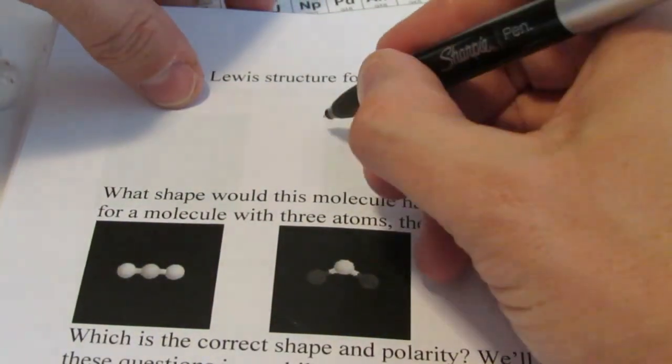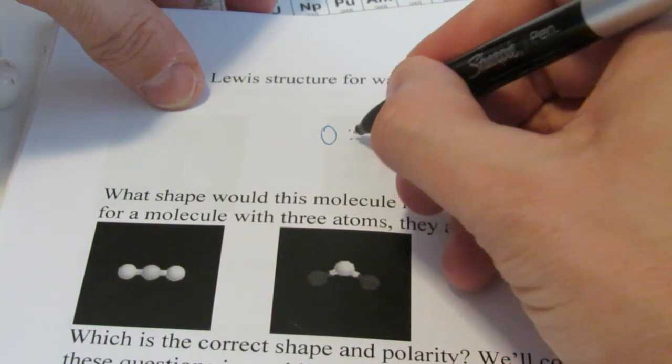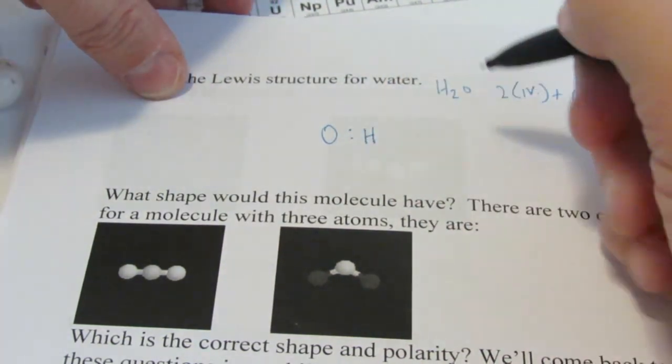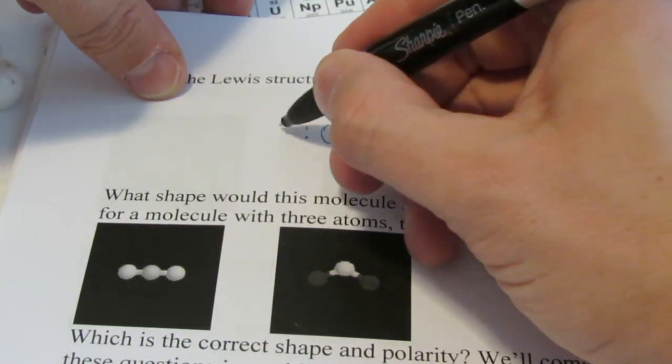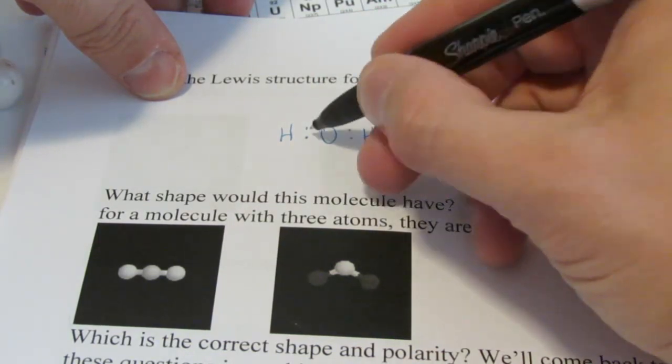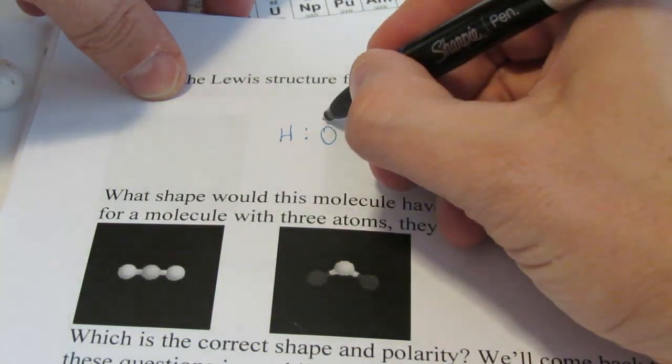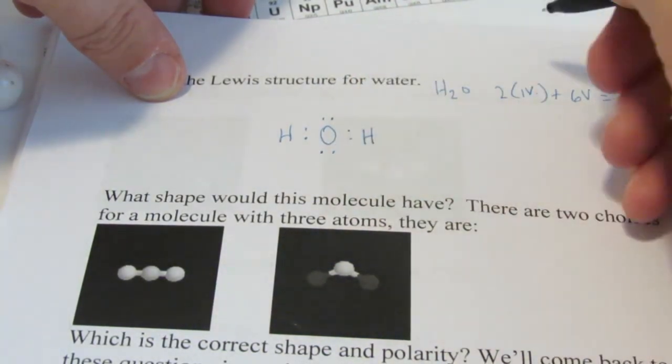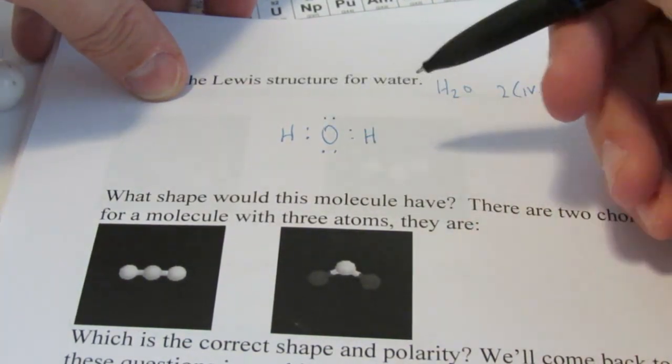So we're going to put oxygen in the center and we'll put a bonding pair between oxygen and hydrogen to the right and a bonding pair to the hydrogen to the left. That's four of my eight. And we will complete oxygen's octet. So voila, there's our Lewis structure for water.